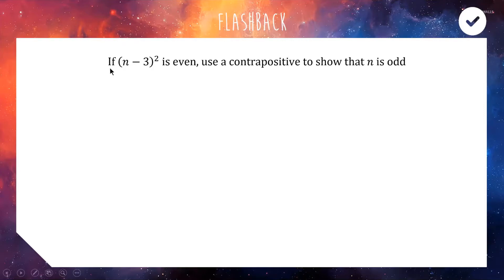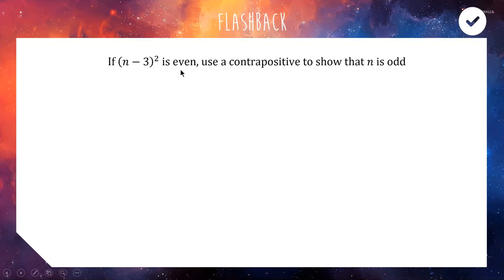Our statement is: if (n−3)² is even, this implies that n is odd. The contrapositive of that statement — if you have A implies B, the contrapositive is not-B implies not-A — means we're turning it around and taking the opposite. So the contrapositive of our statement is: if n is even, this implies that (n−3)² is odd. That is much easier to show, and if we prove that, the contrapositive and the original always have the same truth value, so if you can prove one you've proven the other.